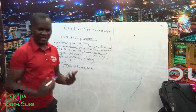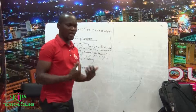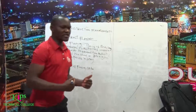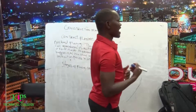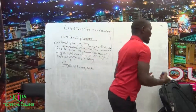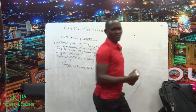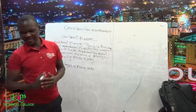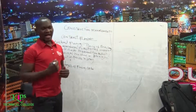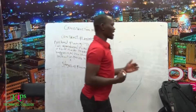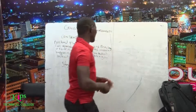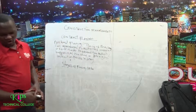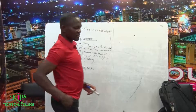We can have three stages of planning. We can have what is called pre-tendering, then we can plan during the pre-contract stage, and then again we can plan during the contract period.